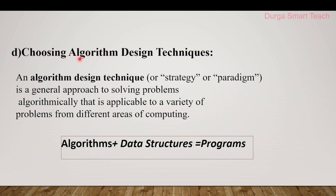The next step is choosing an algorithm design technique. An algorithm design technique, strategy, or paradigm is a general approach to solving a problem algorithmically, applicable to a variety of problems from different areas of computing. Algorithms plus data structures equals programs — a program is nothing but a set of instructions. Examples of algorithm design techniques include divide and conquer, greedy algorithm, dynamic programming, and backtracking.